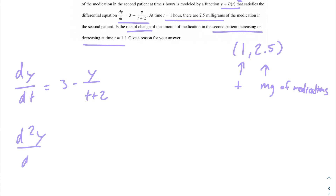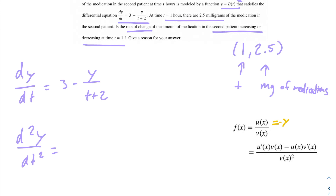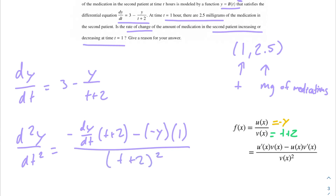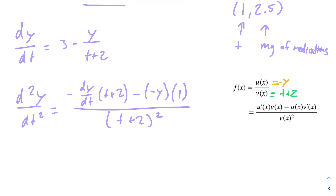To determine if the rate of change is increasing or decreasing, we take the second derivative. Starting from dy/dt = (3 - y)/(t + 2), the 3 is a constant so it goes away, leaving -y/(t + 2). This is set up for the quotient rule: let u = -y and v = t + 2. Applying the quotient rule gives [(-dy/dt)(t + 2) - (-y)(1)] / (t + 2)², which simplifies to [(-dy/dt)(t + 2) + y] / (t + 2)².